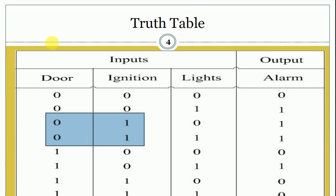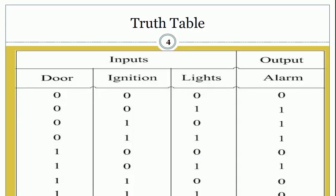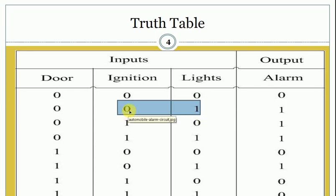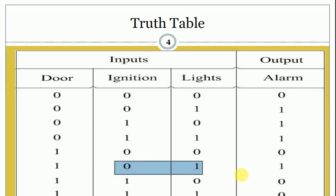Similarly, for the second case, we see that when lights equal to one and at the same time ignition is equal to zero, the output will be one. There are also two cases here: the value of lights is equal to one and the value of ignition is equal to zero, so alarm is one. And for this case as well, the value of lights is equal to one and the value of ignition is equal to zero, so the alarm should be one.